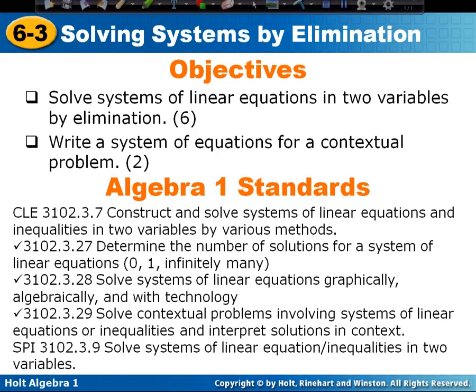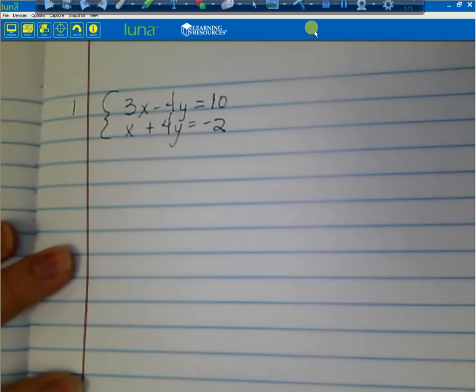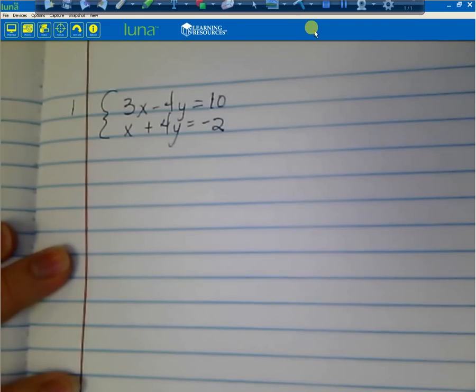Our first objective for today is to solve systems of linear equations in two variables by elimination. Our second objective is to write a system of equations for a contextual problem. Go ahead and write down this system of equations: 3x minus 4y equals 10, and x plus 4y equals negative 2.